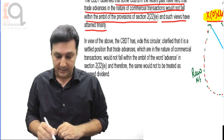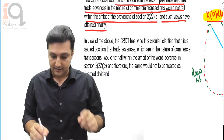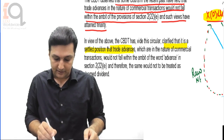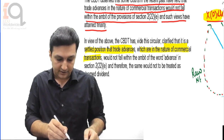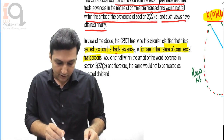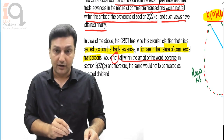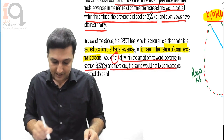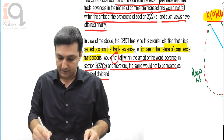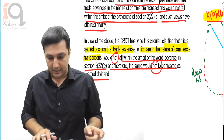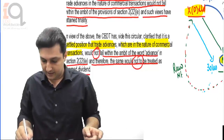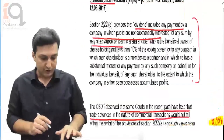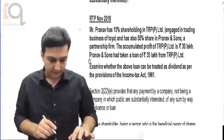So CBDT has issued a circular, clarifying that it is a settled position that trade advances which are in the nature of commercial transactions would not fall within the ambit of the word 'advance' in section 2(22)E, and therefore the same would not be treated as deemed dividend. In simple English: this does not fall within the scope of deemed dividend. Now let's go and have a look at the RTP question.